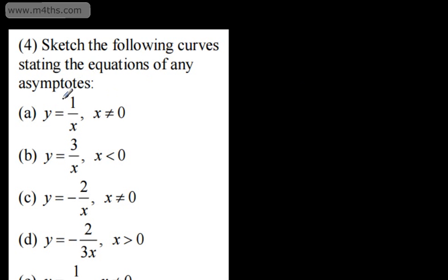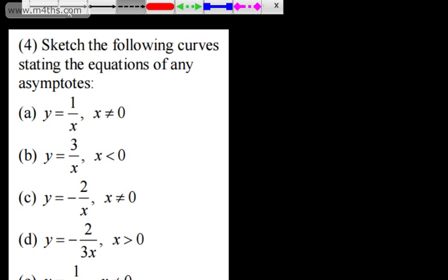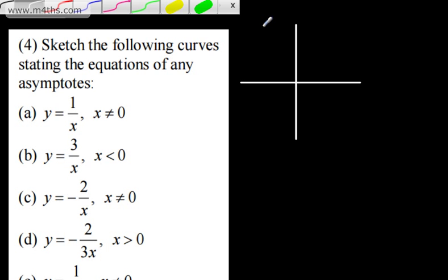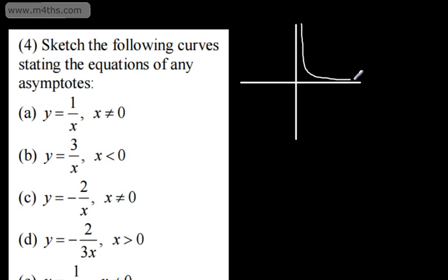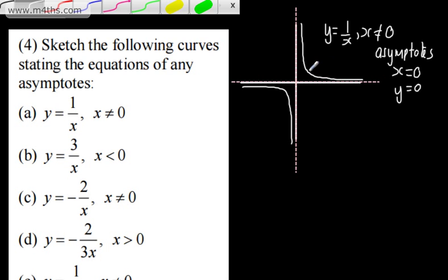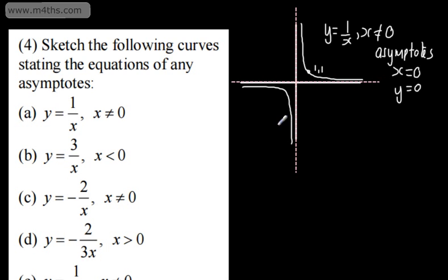We're asked to sketch y = 1/x, stating the equations of any asymptotes. In an exam, all you'd be expected to do is have the rough shape — one curve in the first quadrant coming down, one in the third quadrant. State asymptotes: x = 0 and y = 0. You might even show a point like (1, 1) to demonstrate to the examiner that you know what you're doing.